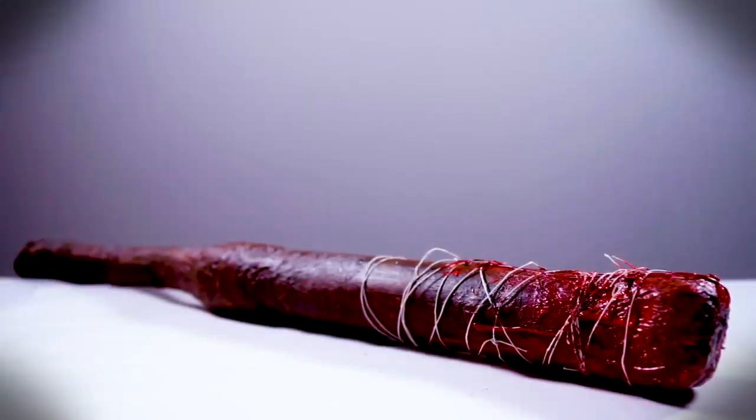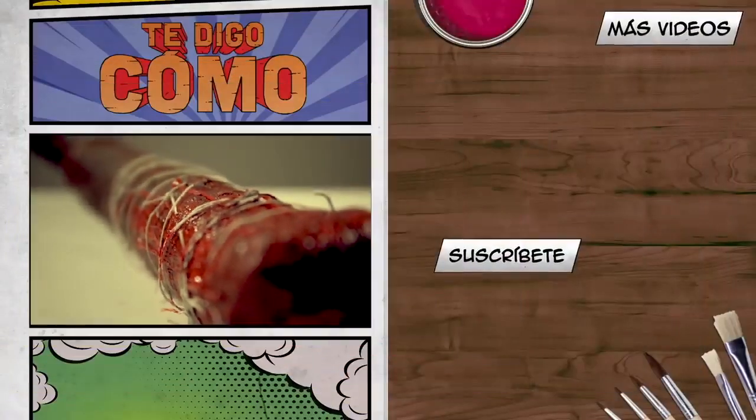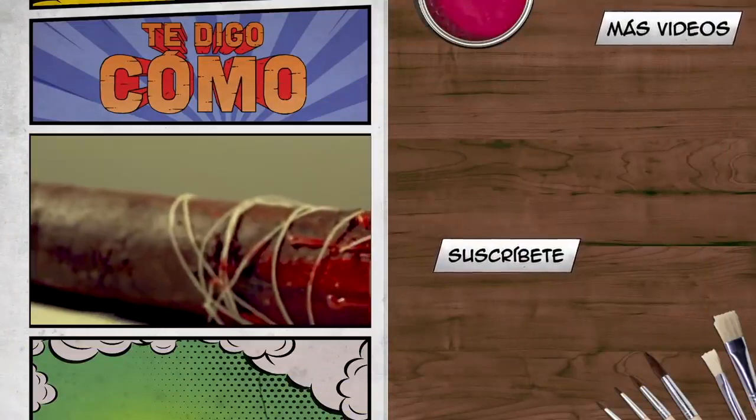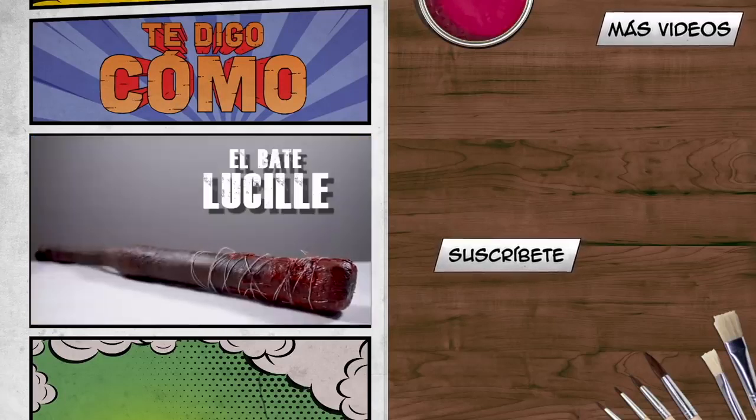And here we have the Bat Lucille of The Walking Dead. Zombies better watch out. And that's it for today's I Tell You How. If you liked it, give it a like, and let us know in the comments what you would like us to do in the next I Tell You How. Until next time.